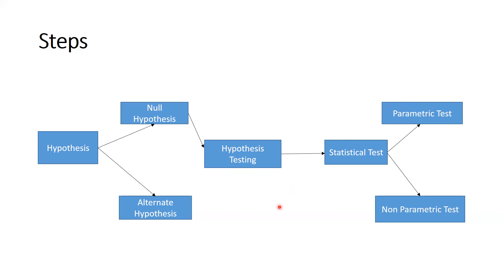What could be the condition? Which test would be applicable — whether it would be a parametric test or a non-parametric test? That depends upon our data, whether our data is normally distributed or not. Because a non-parametric test we are also calling a distribution-free test. For the non-parametric test, there is no assumption that data should be normally distributed. But for the parametric test, that is the most important condition: data should be normally distributed, and data should be collected at the interval or ratio scale. But for the non-parametric test, data should be collected at nominal or ordinal scale.